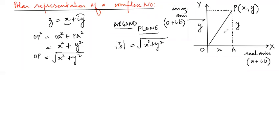This thing matches with that. So we say OP is modulus of z and we name it as r. We name modulus of complex number as r.